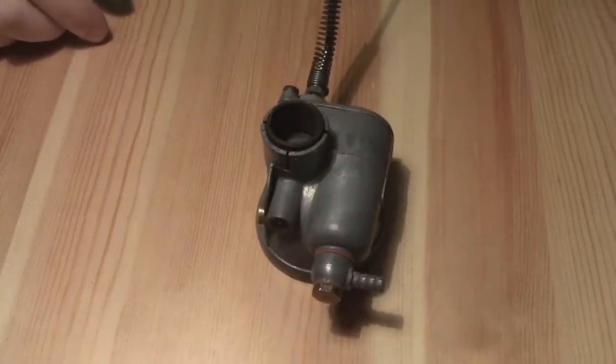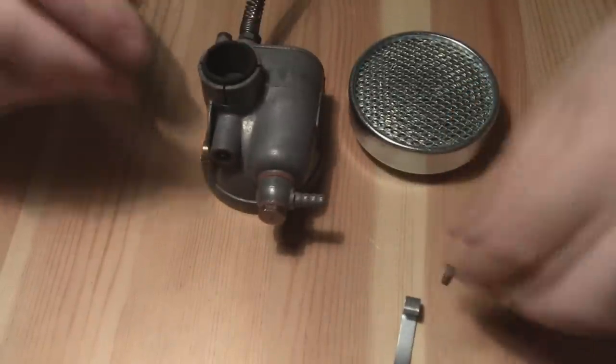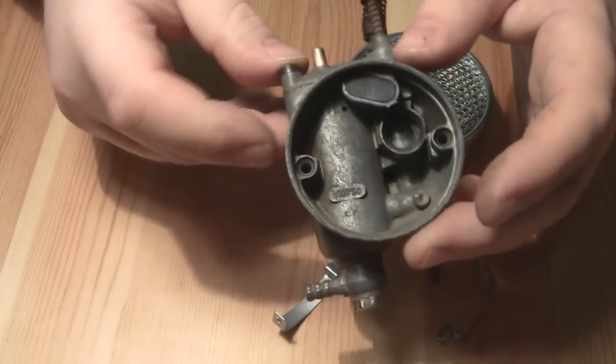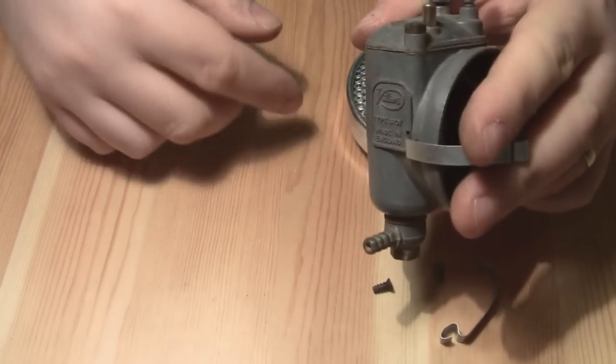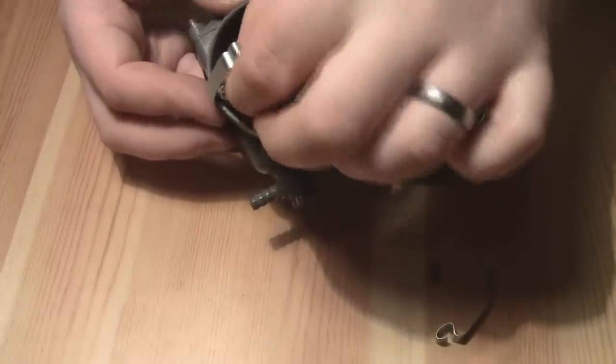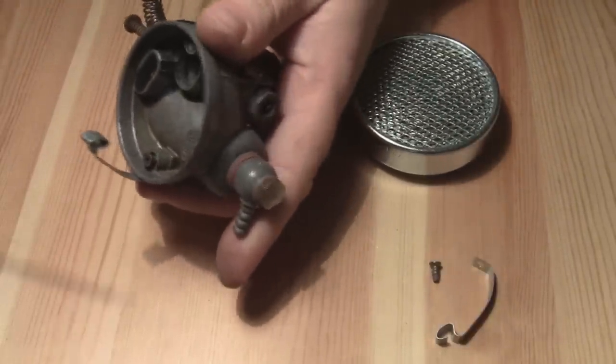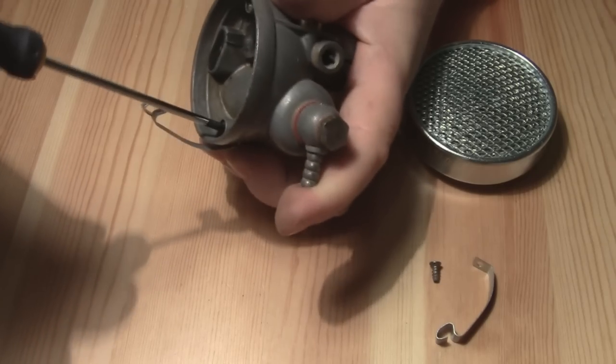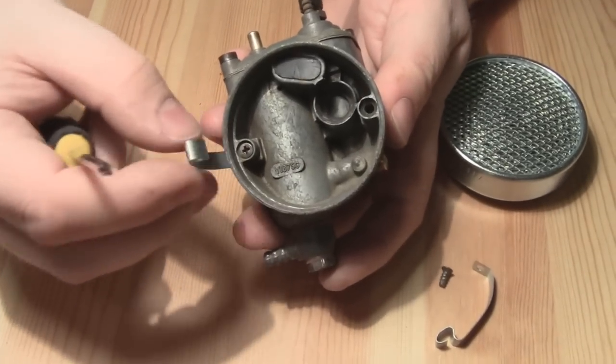But for now the next thing is putting all the air filter stuff on. So you've got these two clips here which are held in by two screws at the front there. So the clip goes in from the side like that and then the screw goes in from the front into that hole. There's quite a bit of play in the clips but they're held in securely.